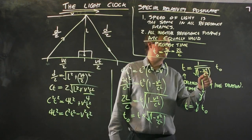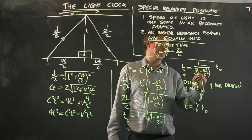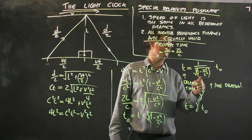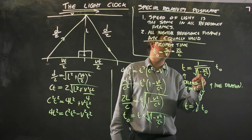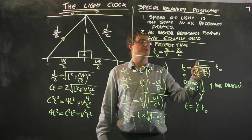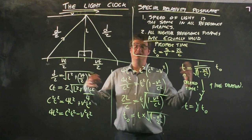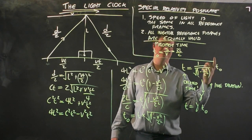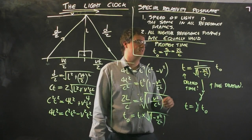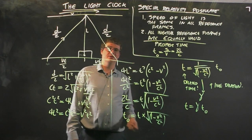The faster you move, this fraction gets bigger, so the resultant down here gets smaller because 1 take a number close to 1 gives you a small decimal number. 1 divided by a small decimal number is a big number, and so the Lorentz factor gets bigger the faster you're going. Time gets dilated more and more the faster you go.